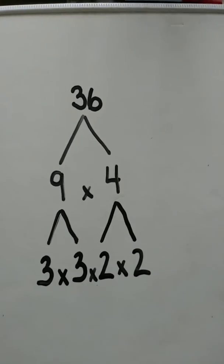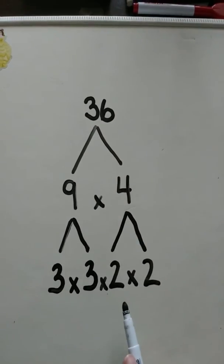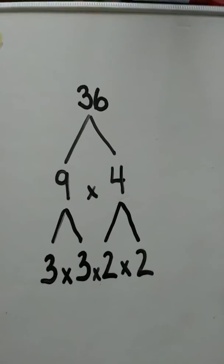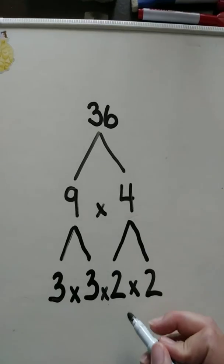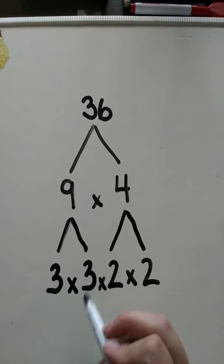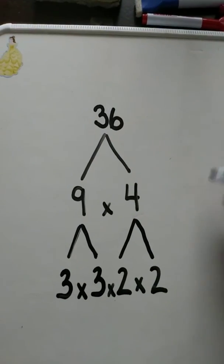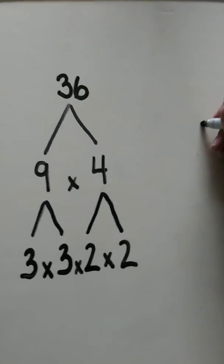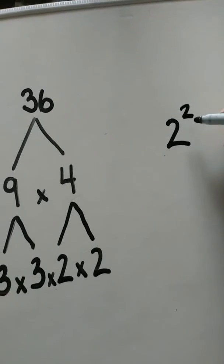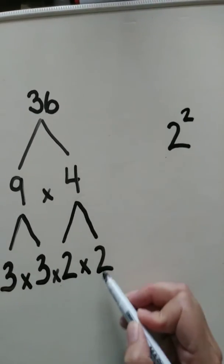So, how we do that to find the answer is we're just going to take how many times each number is presented. So, if you go back to what you learned about exponents, here we have a 2 times 2 and a 3 times 3. So, we have 2 to the power of 2, also known as 2 times 2. That's this part.